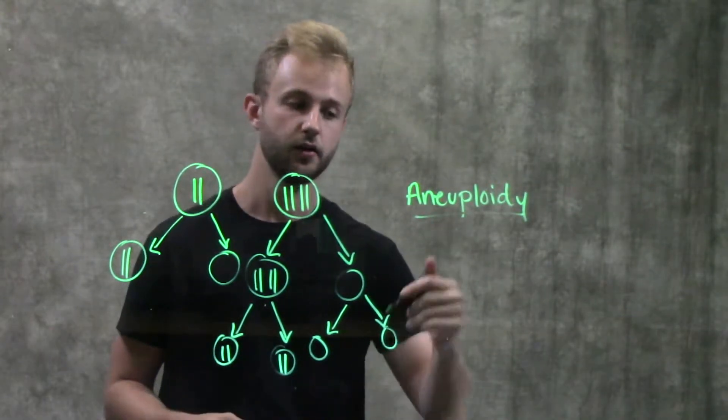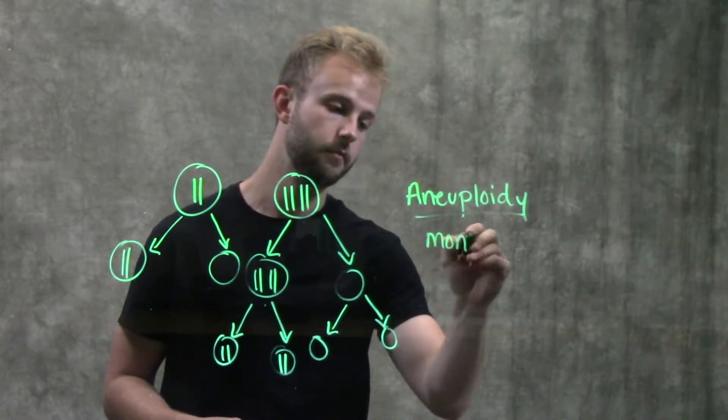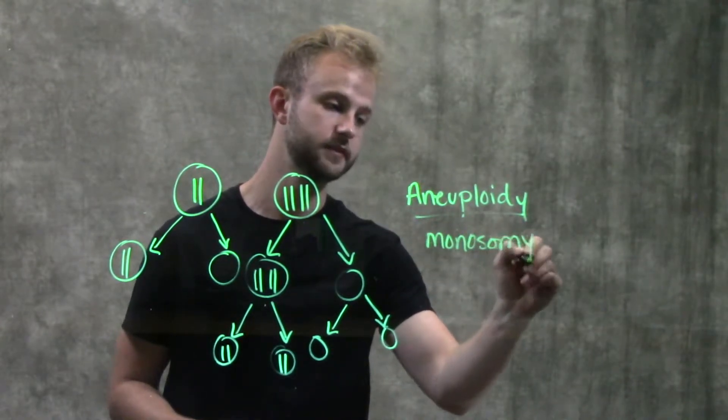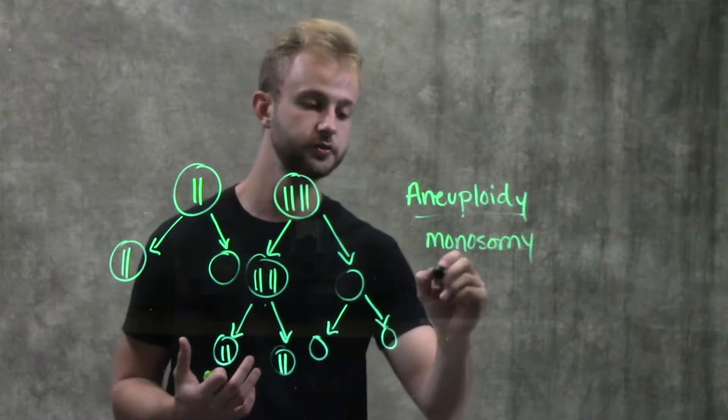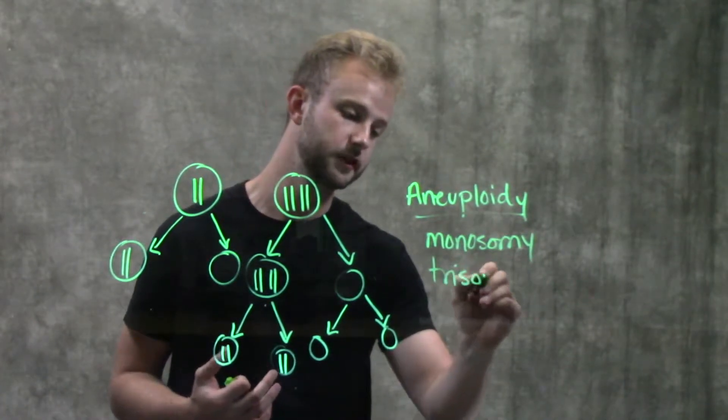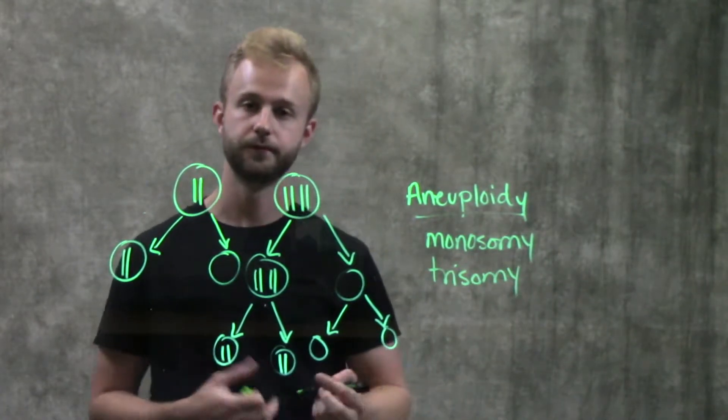So within that, we can have monosomy, which means they just have one copy of a particular chromosome, or trisomy, which means they have three.